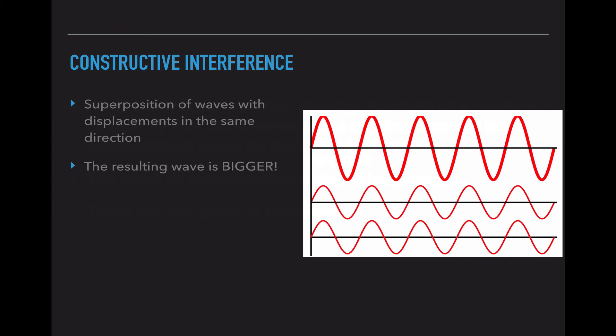The first type is constructive interference and that's when you have the displacements happening in the same direction. So on this diagram we have a crest lining up with a crest. So you actually add those heights together and you get a larger crest. You have a trough lining up with a trough. You add those together and you get a larger trough. So constructive interference is creating bigger waves.